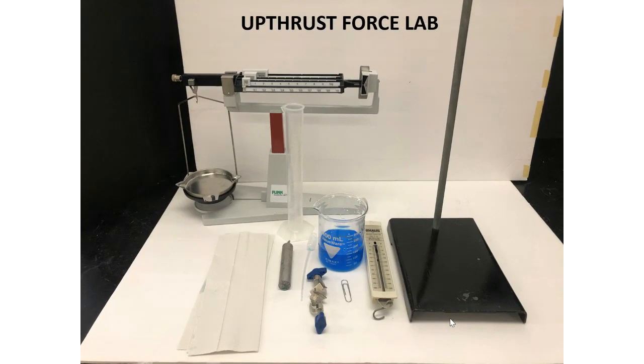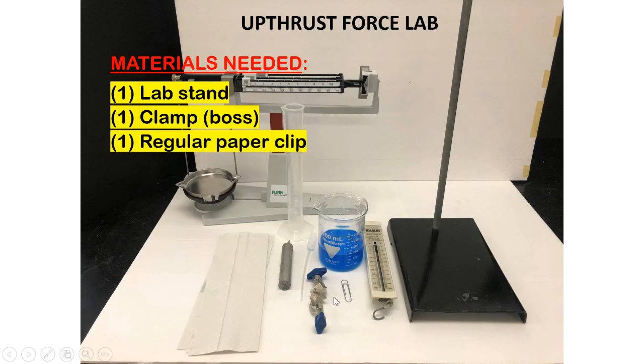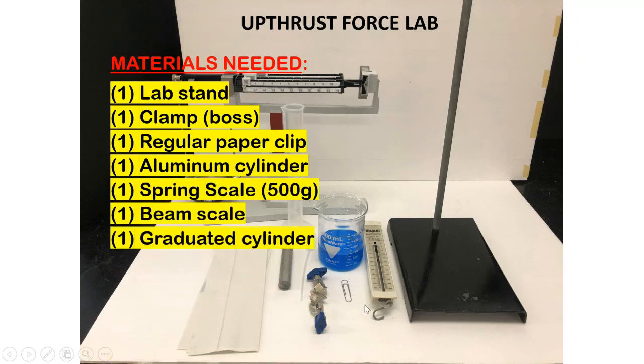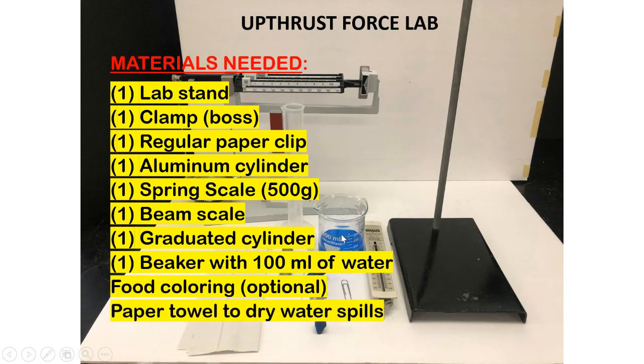To complete this lab, you need the following materials: one lab stand, one clamp, one regular paper clip, one aluminum cylinder, one spring scale 500 grams, one beam scale, one graduated cylinder, one beaker with water, food coloring, and paper towel to dry water spills.